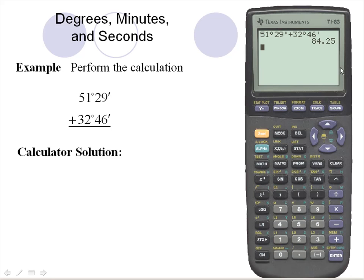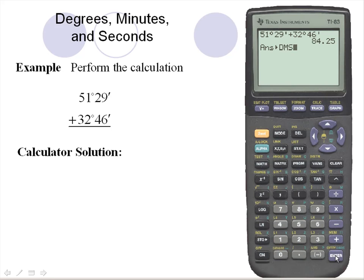In order to convert this decimal degree into degrees, minutes, and seconds, I must go back into the angle section of the calculator. The fourth option is DMS, which is short for degrees, minutes, and seconds. So I hit enter a couple of times, and we get the sum, which is 84 degrees, 15 minutes.